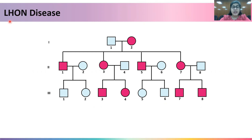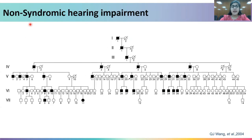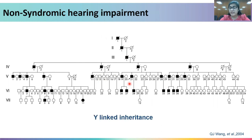The first specific disease example is LHON — Leber's Hereditary Optic Neuropathy. One can clearly observe that all the children of an affected mother are affected, and an affected female transmits the trait to all her children. On the other hand, an affected father is not able to transmit the trait to the next generation. This is a typical example of mitochondrial inheritance.